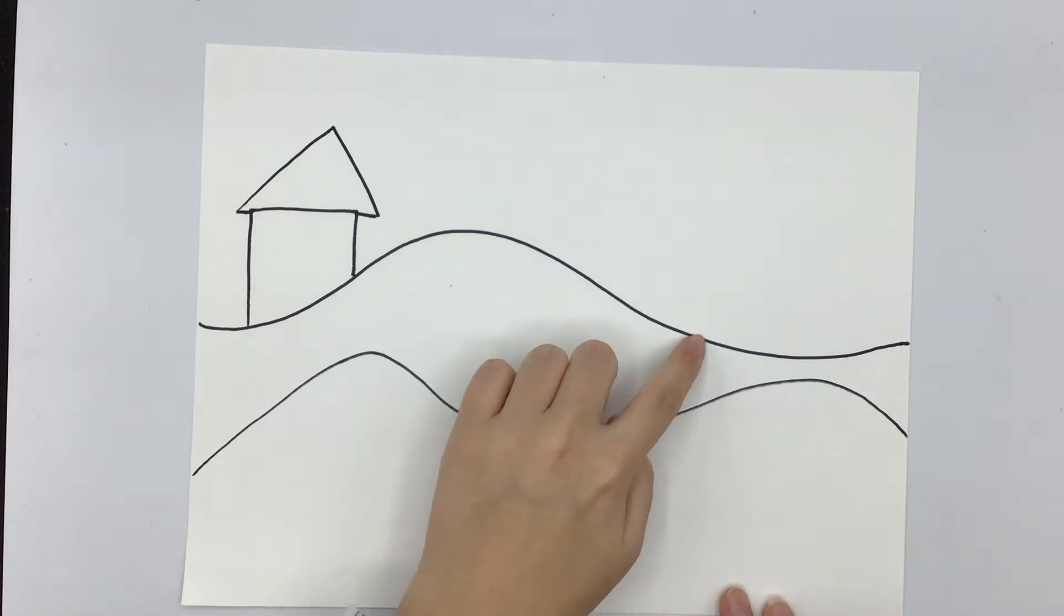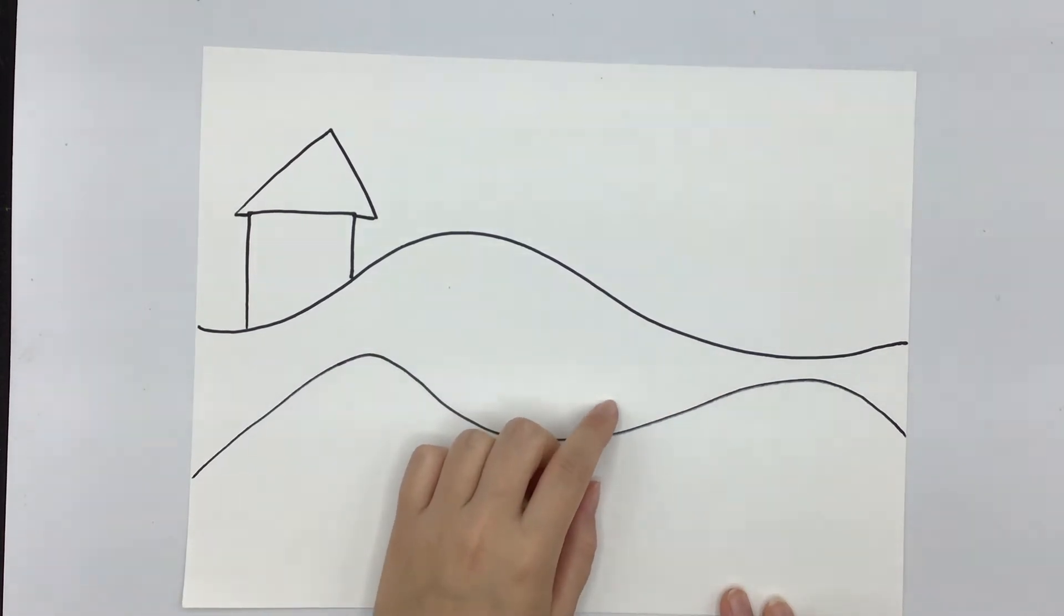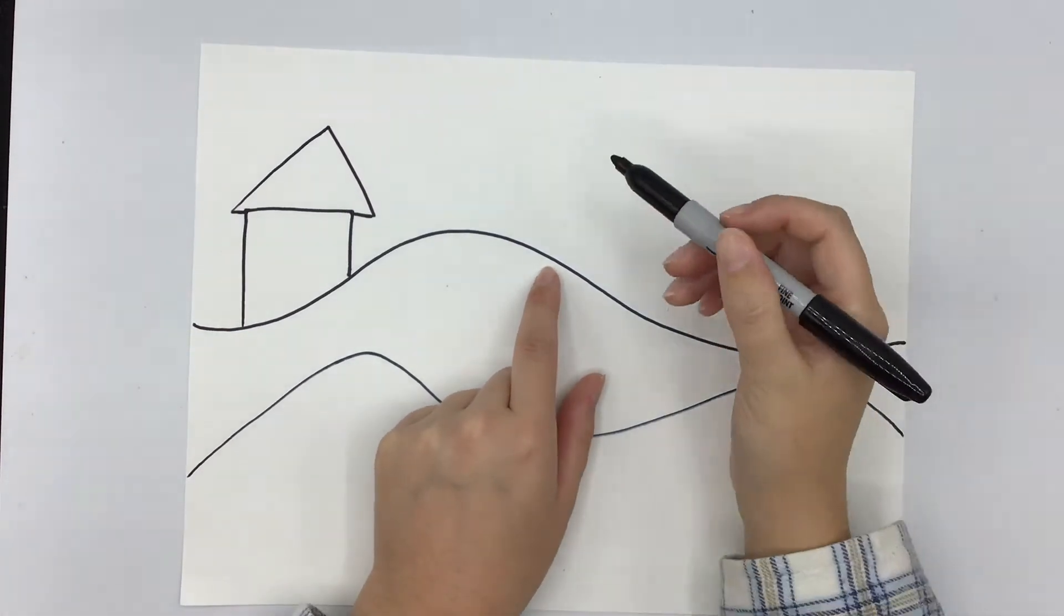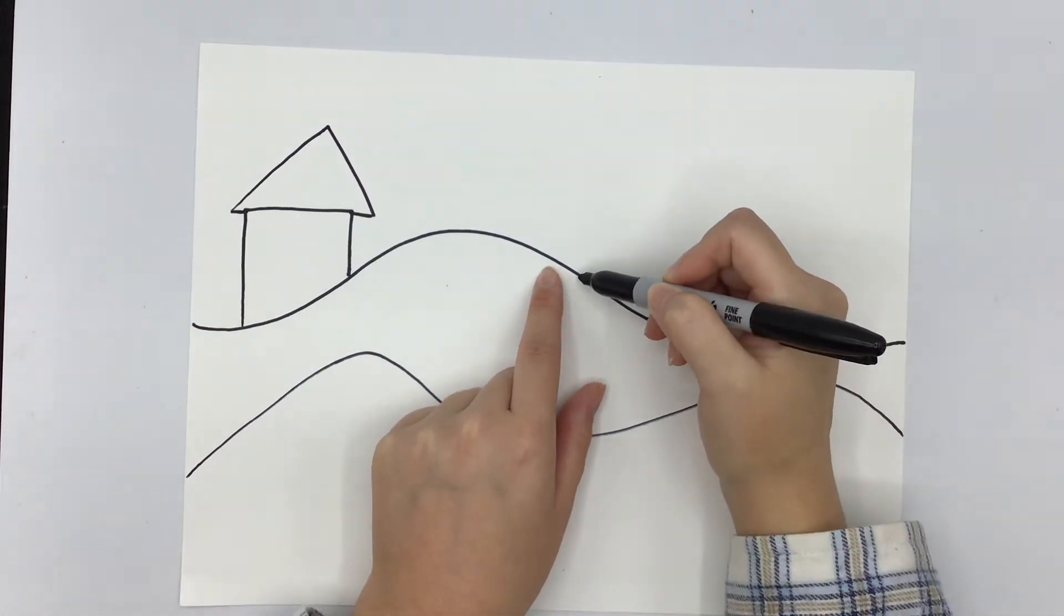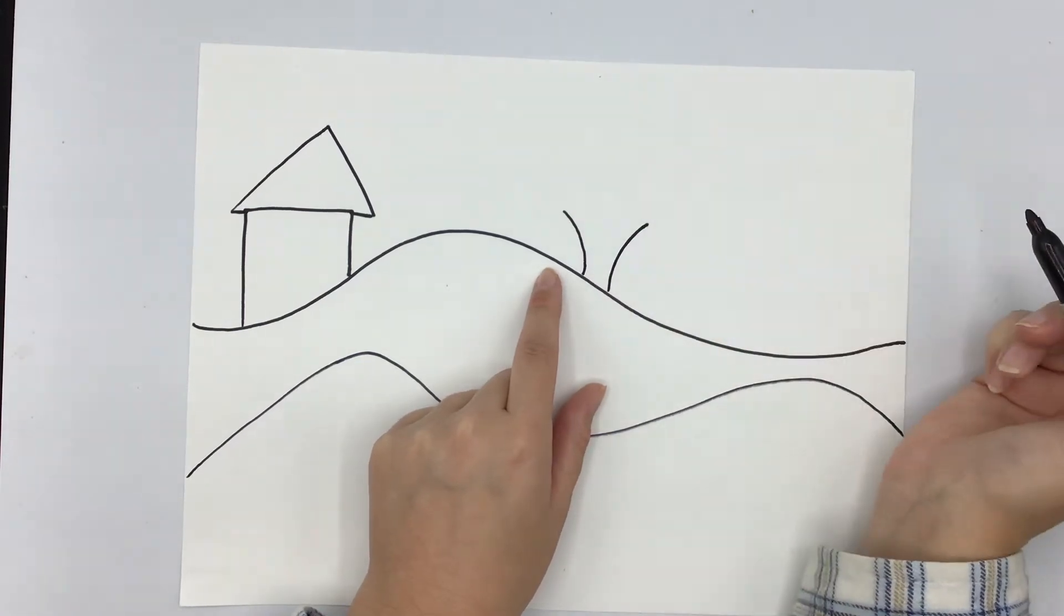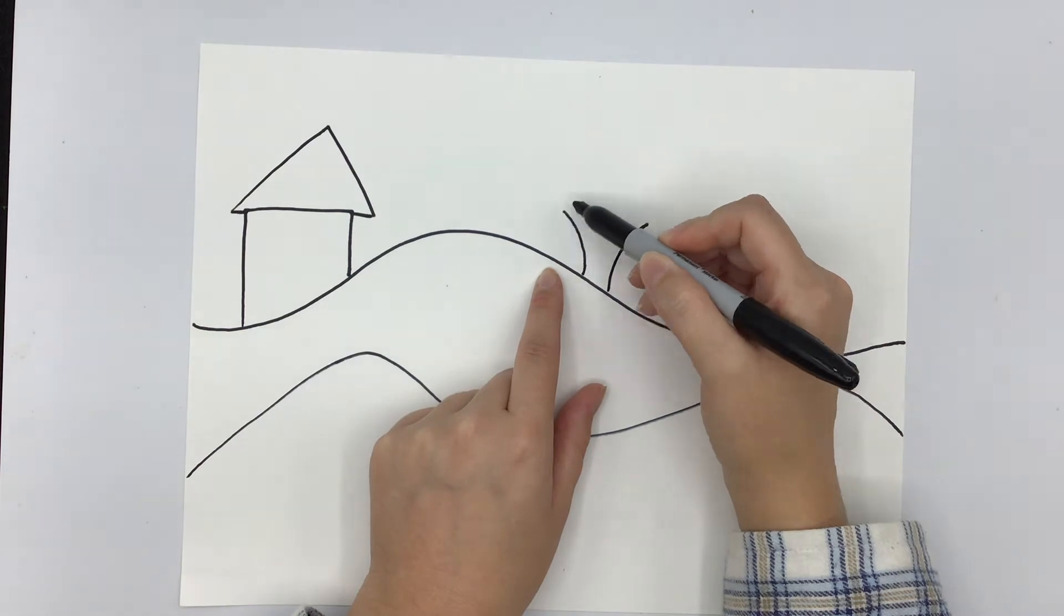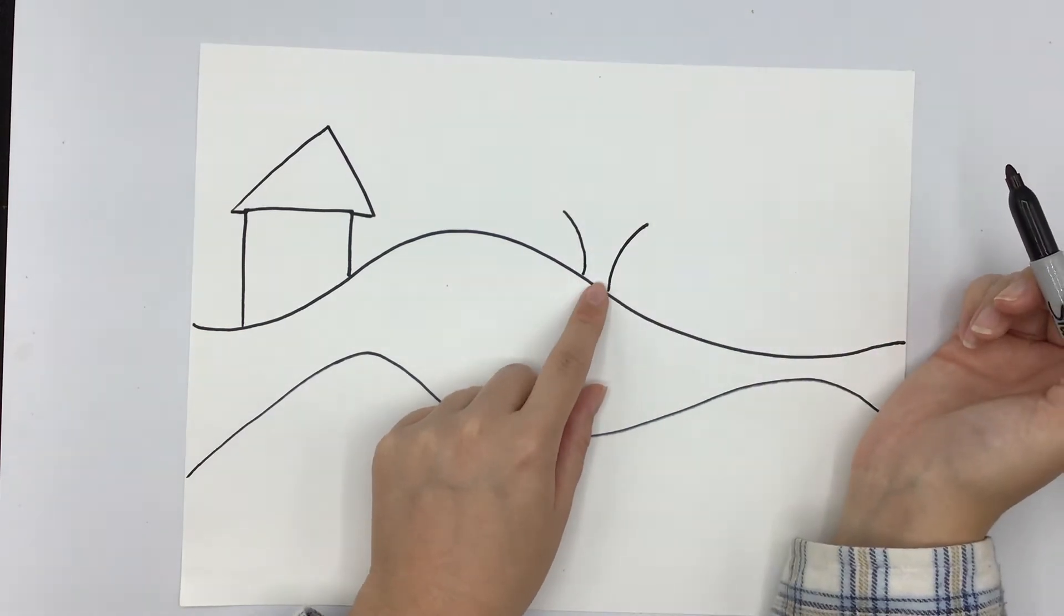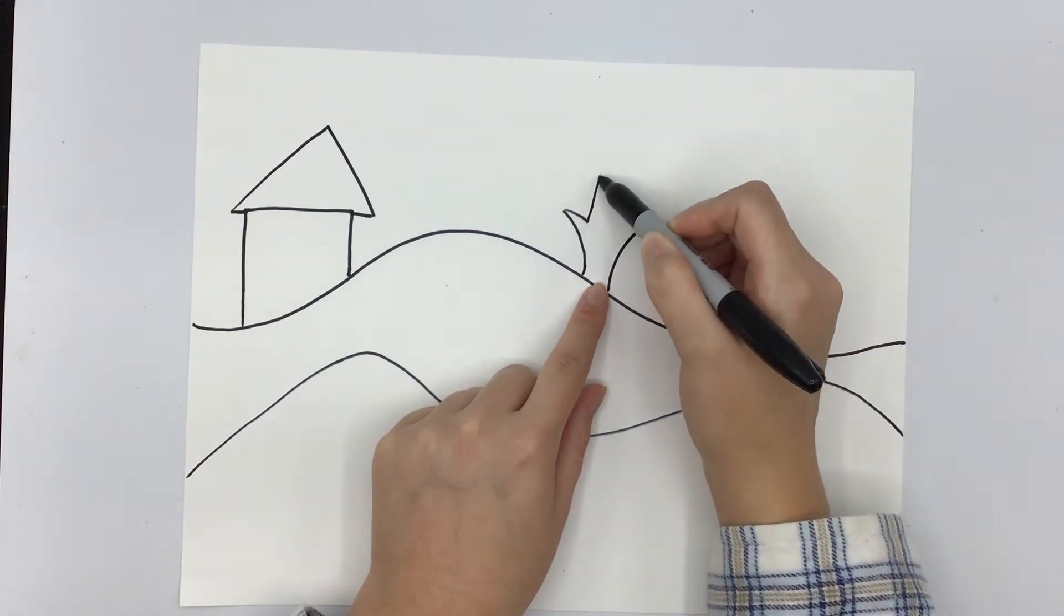Now on top of this wavy line I want to add some trees, but before I add trees I want to add tree trunks. And the way I add tree trunks is I make two curved lines like this that kind of go out away from each other, and then on top of those curved lines I add zigzaggies.